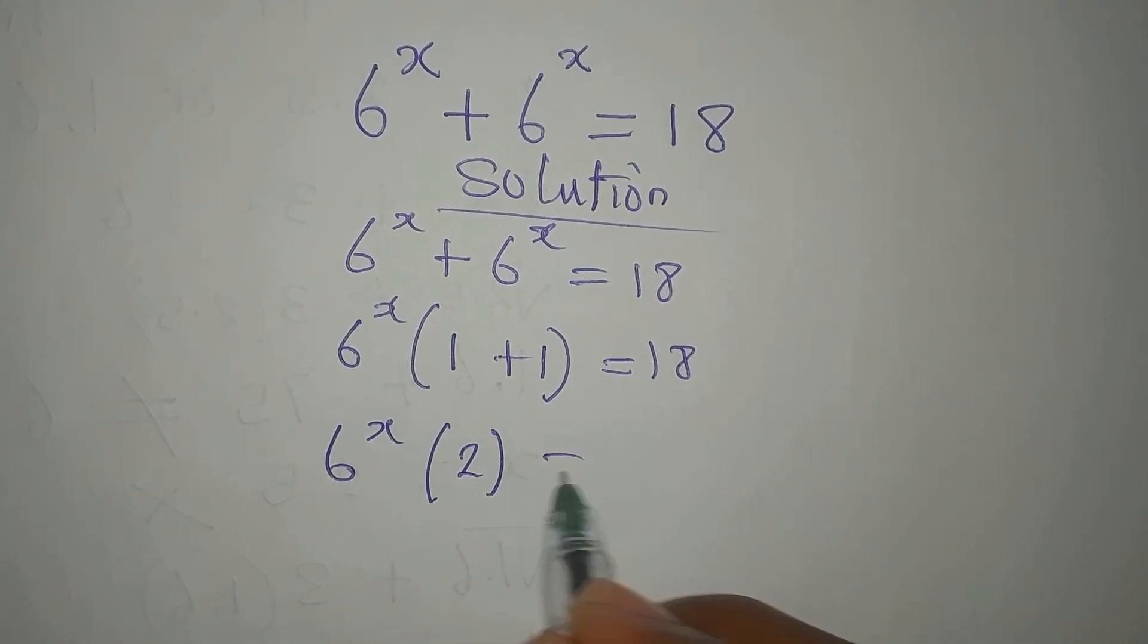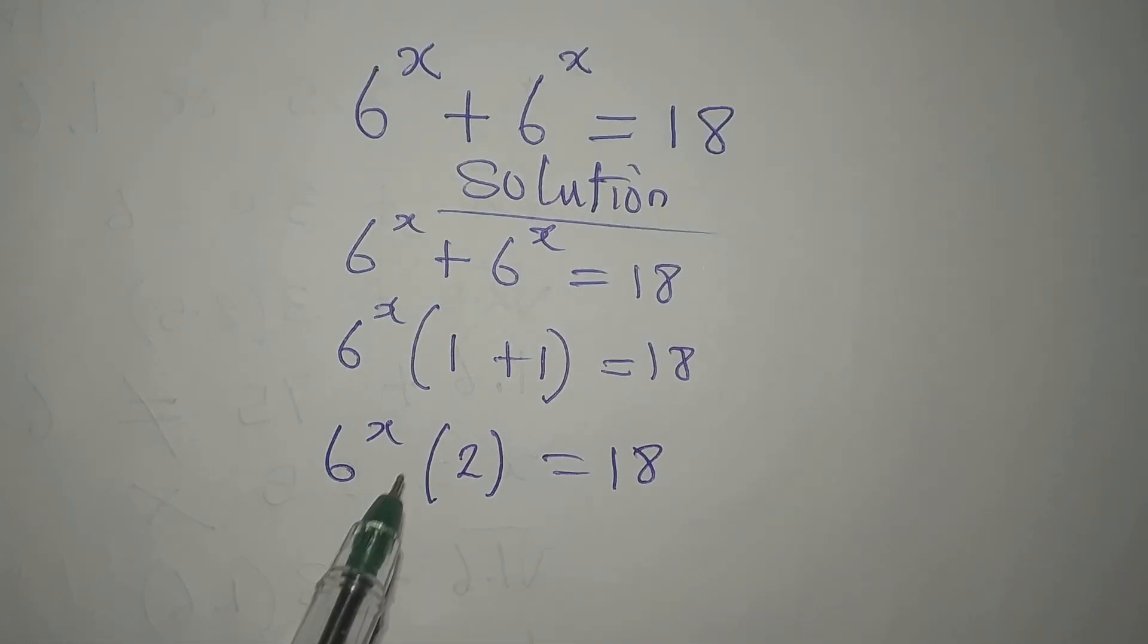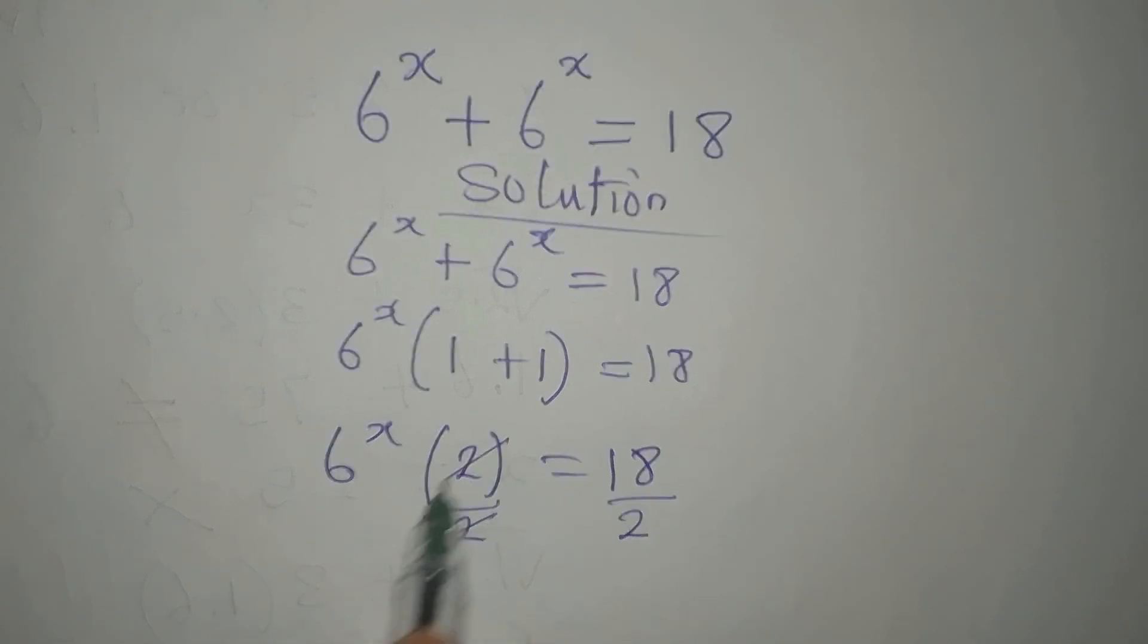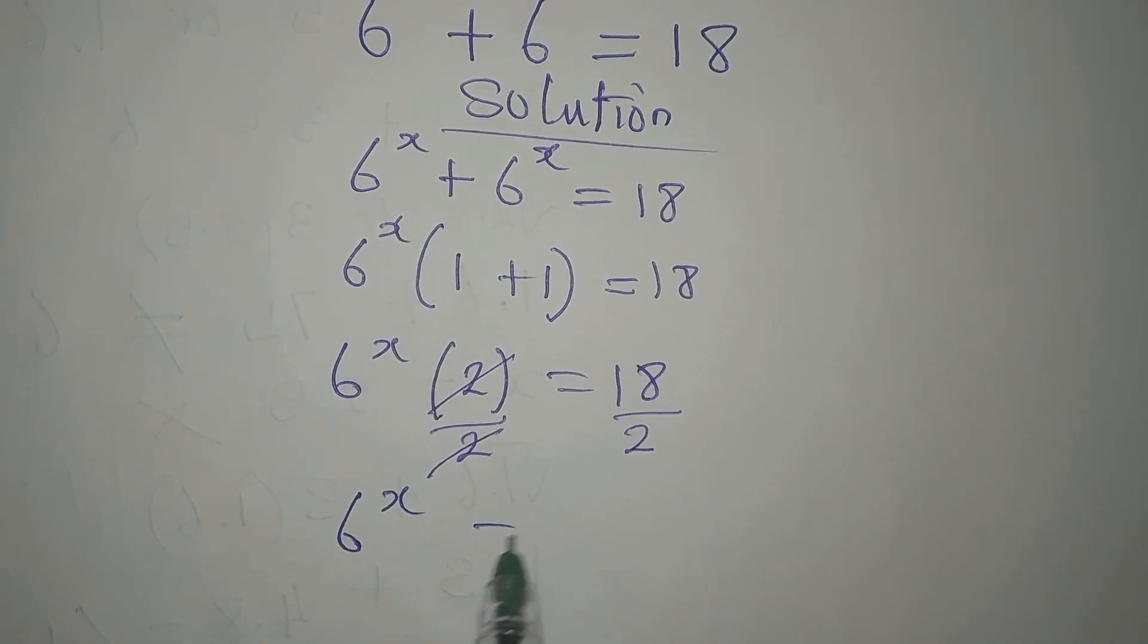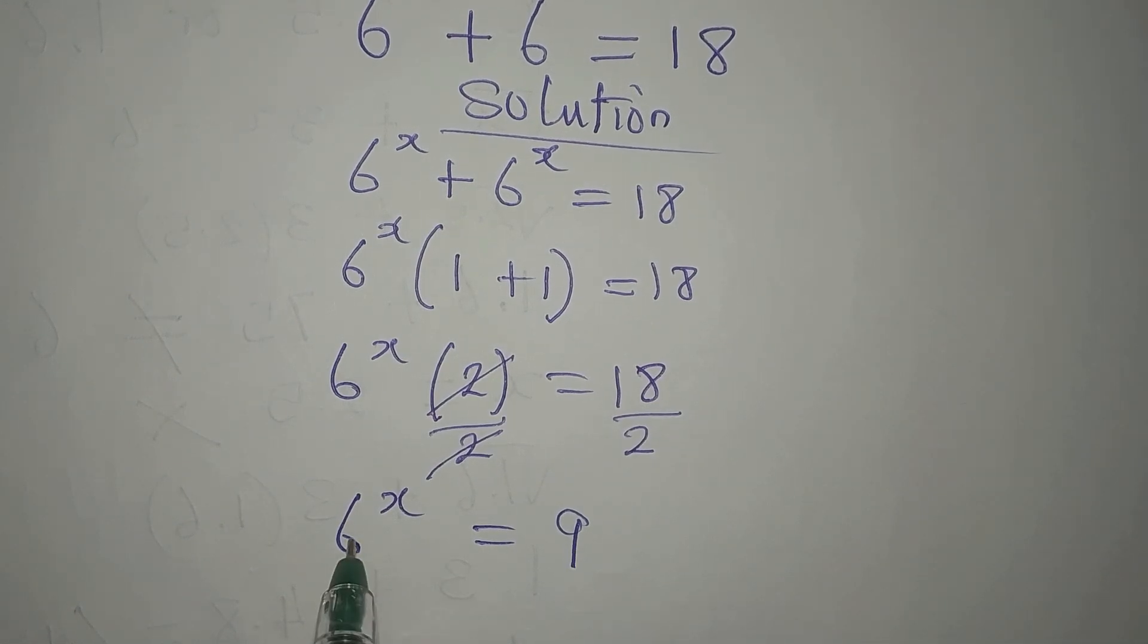Now we have 6 to the power of x multiplied by 2 equals 18. Because we are multiplying these two, we can divide by 2, then divide this by 2. Now 6 to the power of x is equal to 9. We cannot write 9 in this form.